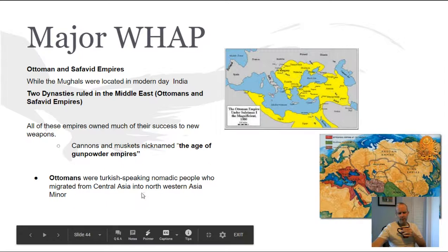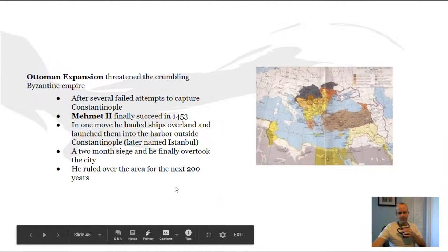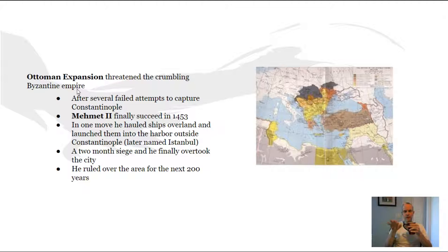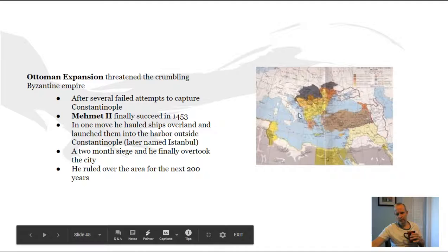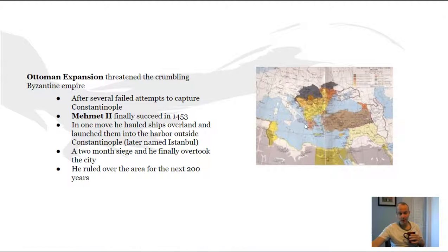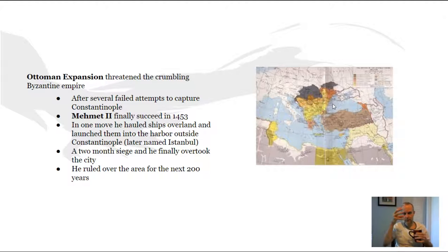The Ottomans were Turkish-speaking nomadic people who migrated from Central Asia into northwestern Asia Minor. The Ottoman Empire expanded on the carcass of the Byzantine Empire. Remember the Roman Empire broke into two sections, and the Byzantine Empire was what remained with Justinian and Theodora — remember the Justinian Code. The Ottomans came in and finally broke what was left of the Roman Empire, the Byzantine Empire, completely wiping it out. The Ottoman Empire, which was Muslim-based, came in and facilitated the transformation of the Byzantine Empire into the Ottoman Empire.